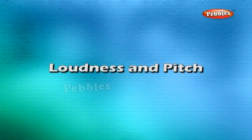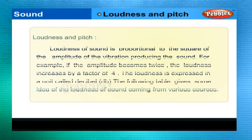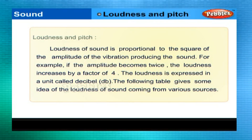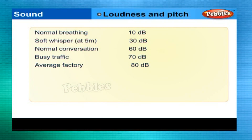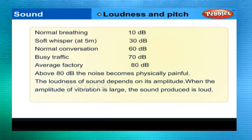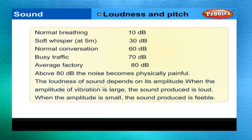Loudness of sound is proportional to the square of the amplitude of the vibration producing the sound. For example, if the amplitude becomes twice, the loudness increases by a factor of 4. Loudness is expressed in a unit called decibel (dB). When the amplitude of vibration is large, the sound produced is loud. When the amplitude is small, the sound produced is feeble.